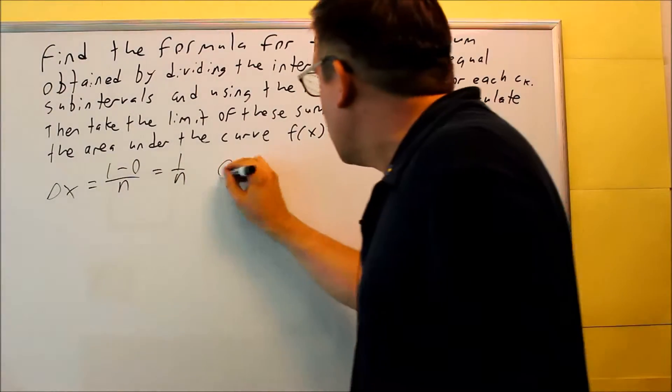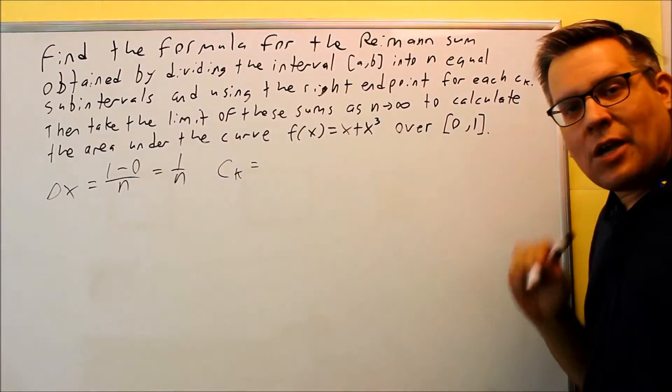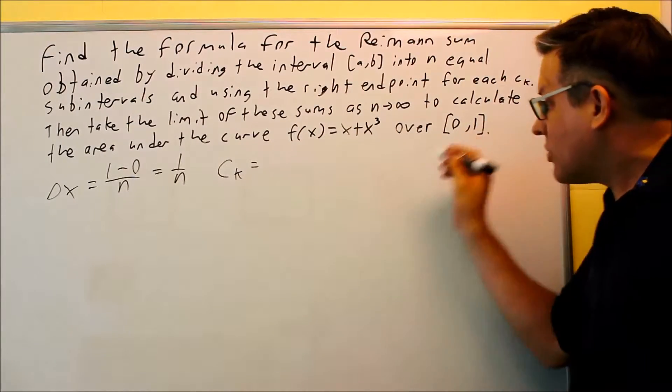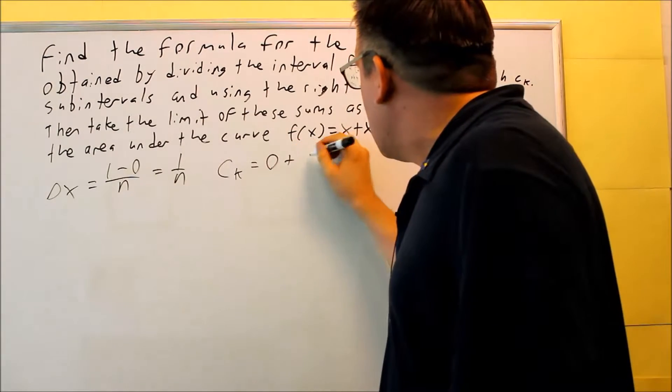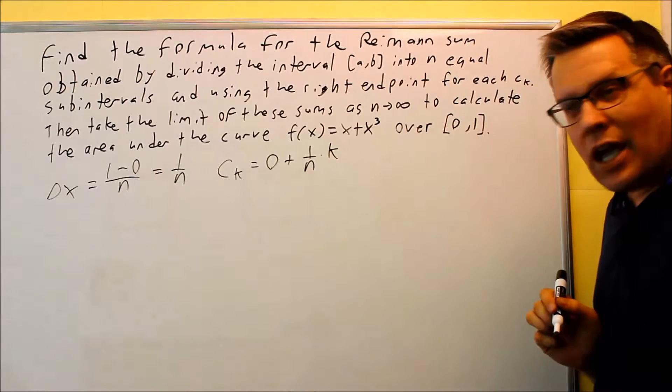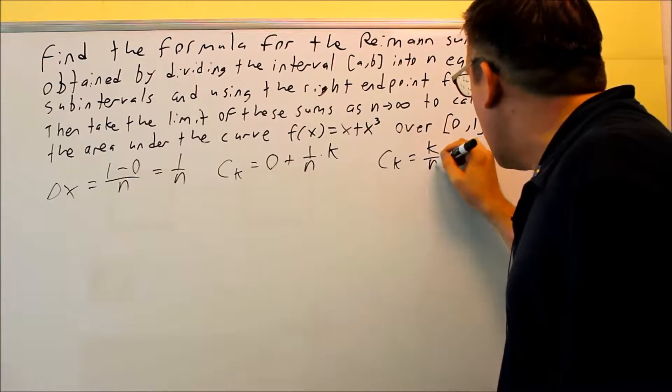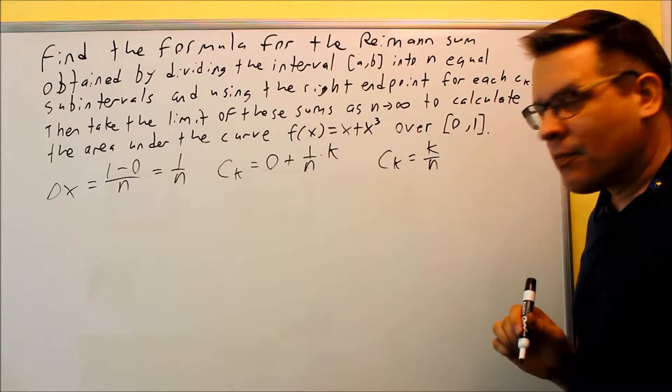Next thing we're going to look at is your ck. Your ck formula is a plus delta x k. Your a is 0 this time. Delta x is 1 over n. You're multiplying it by k. That's using the formula. Your ck is now going to be k over n. That's the one that we're going to use here.